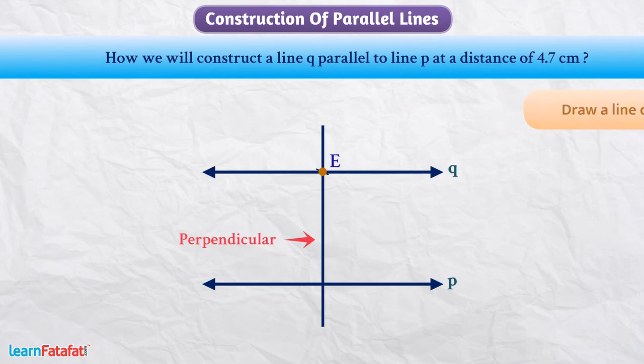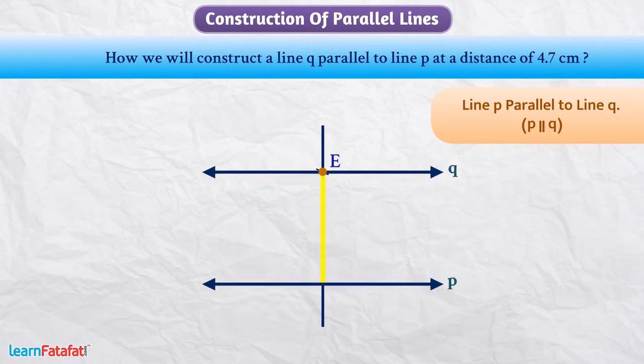In this way, we have constructed line P parallel to line Q. If we measure the distance between line P and line Q, it will be 4.7 cm. Therefore, we can say that line Q and line P are at a distance of 4.7 cm. I hope you have understood the topic very well. Thanks for watching this video.